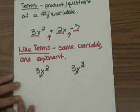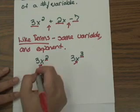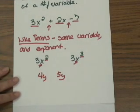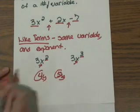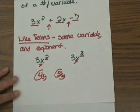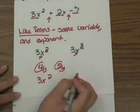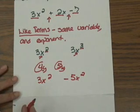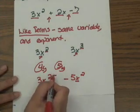Let's look at some that are like terms. For instance, 4y and 5y are like terms because they both have the same variable with the same exponent — basically, you're combining the coefficients 4 and 5. Another example: 3x squared and negative 5x squared are like terms because they have the same variable and the same exponent.